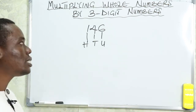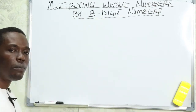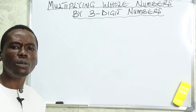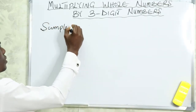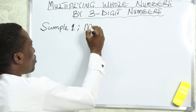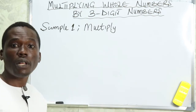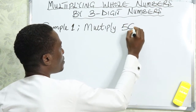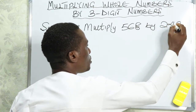Let's start with the very first example we want to look at today, and with this example we're going to consider all three methods. For sample one, we are asked to multiply 568 by 243.